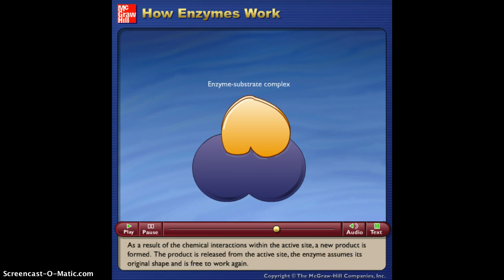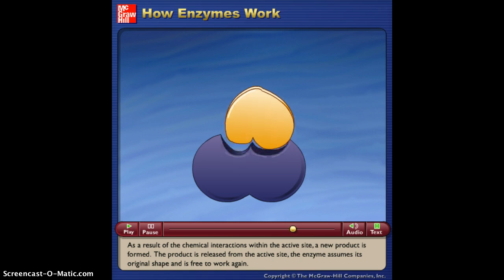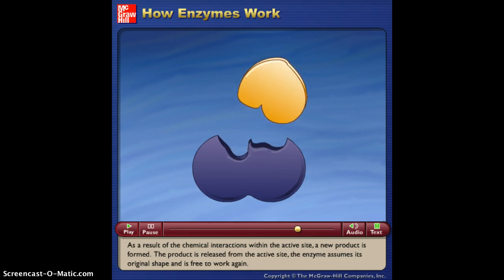As a result of the chemical interactions within the active site, a new product is formed. The product is released from the active site, and the enzyme assumes its original shape and is free to work again.